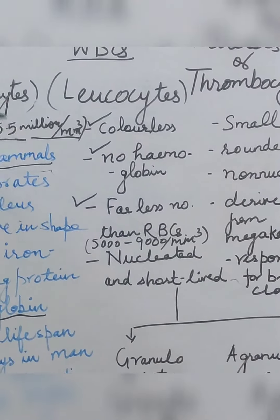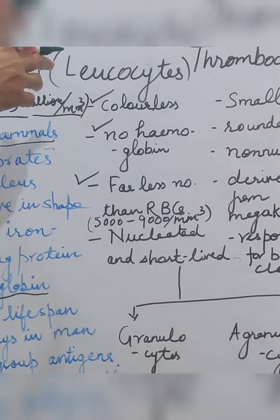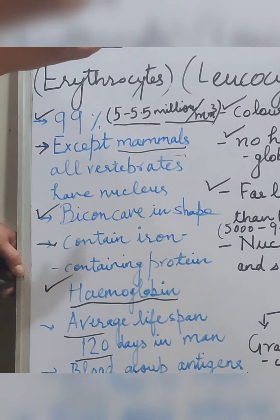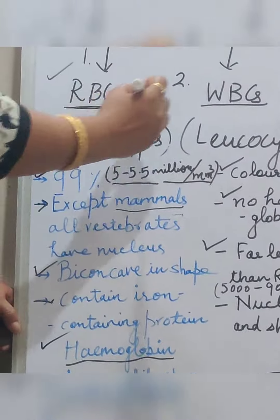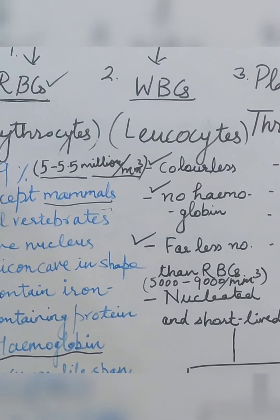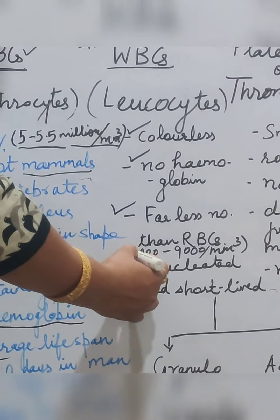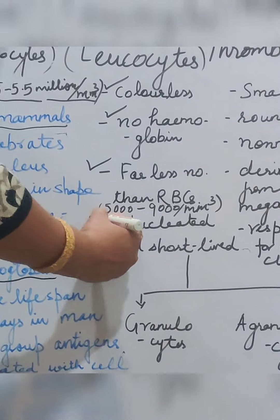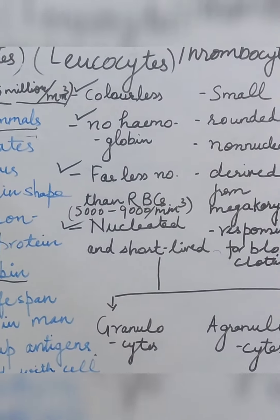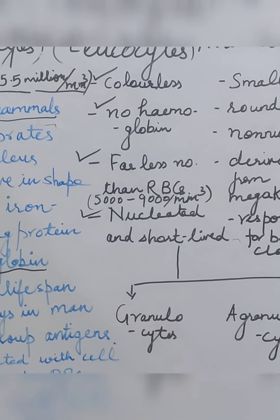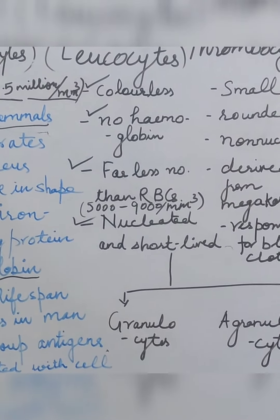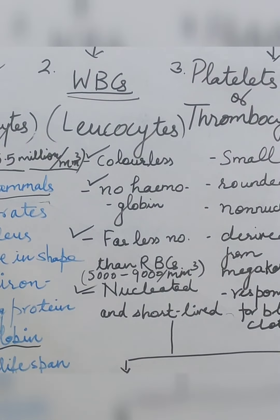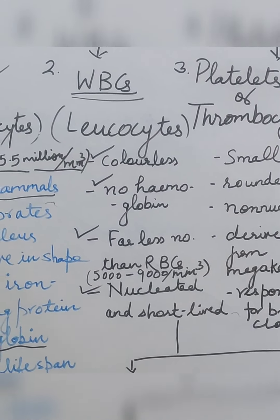The number of WBCs is far less. RBCs are 5 to 5.5 million per cubic mm, while WBC count is much less — varying from 5,000 to 9,000 per cubic mm. These cells are nucleated and short-lived. They are related with infection and are our second line of defense — the first line being the skin.